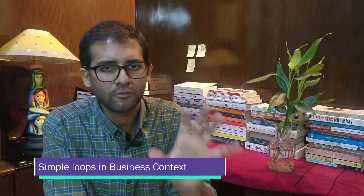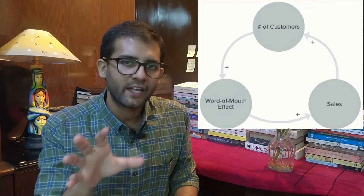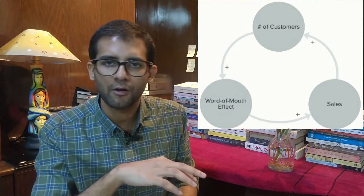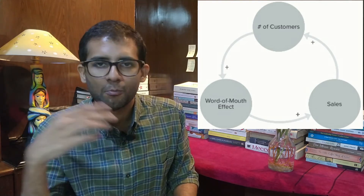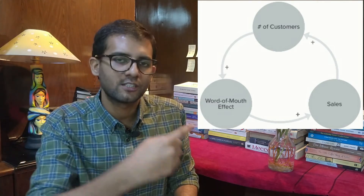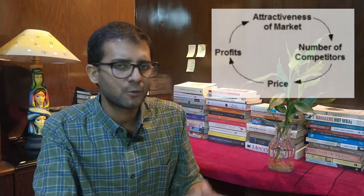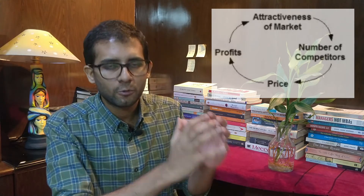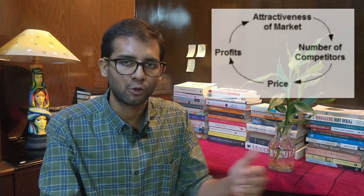Let's look at a couple of examples from the business context. What would be a reinforcing loop? Say you have a product and you are making a lot of sales. A lot of sales and customer satisfaction will lead to more word of mouth, which will lead to more sales and more market share, which means even more word of mouth — that's a positively reinforcing cycle. What could be a balancing loop? In a very attractive market with high profits and few competitors, more competitors will come in, leading to price competition, which drives down profit and thereby reduces market attractiveness — so an equilibrium is maintained.